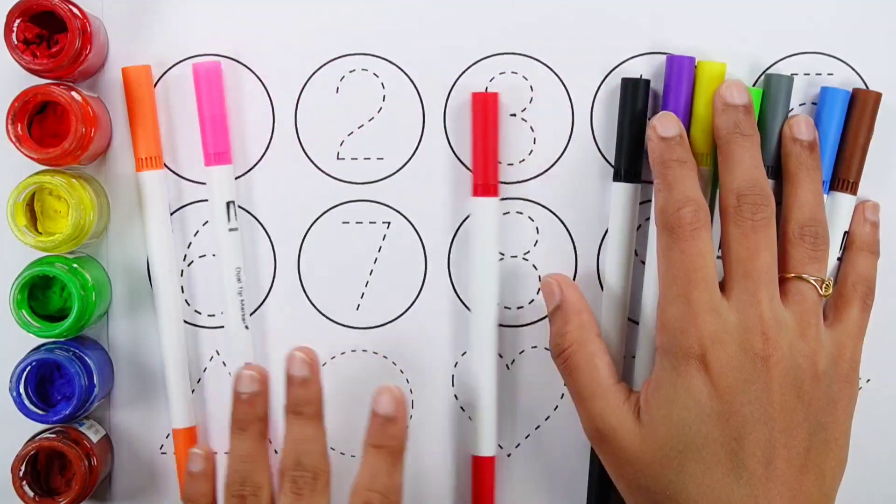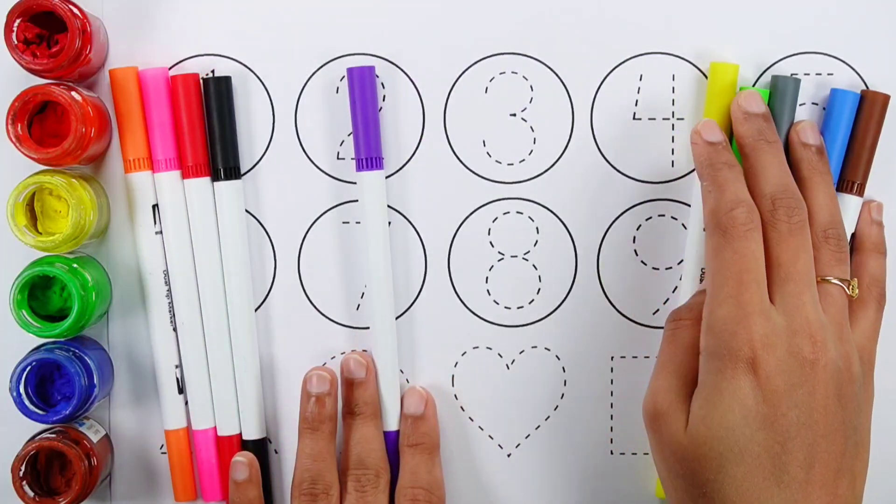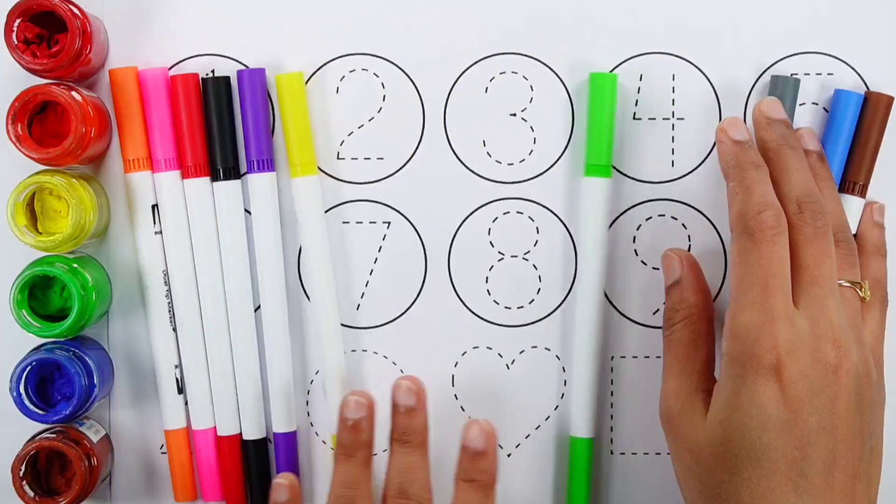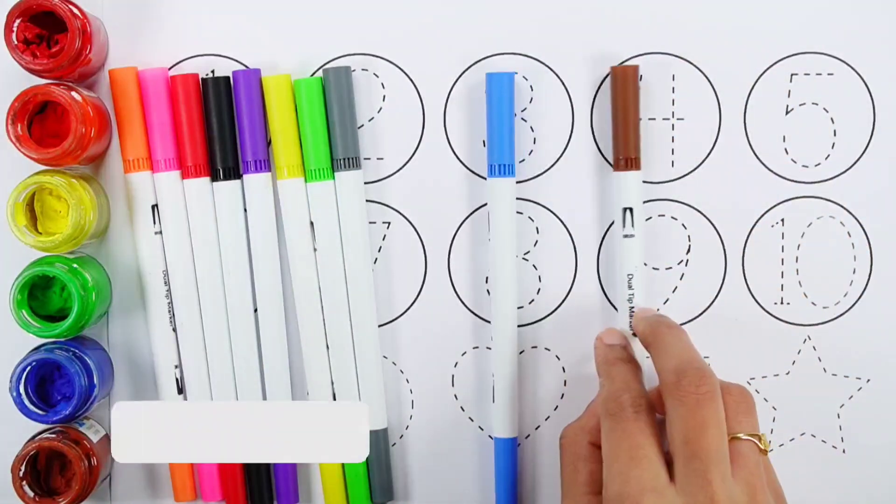Orange color, pink color, red color, black color, violet color, yellow color, green color, gray color, blue color, brown color.